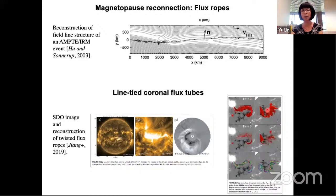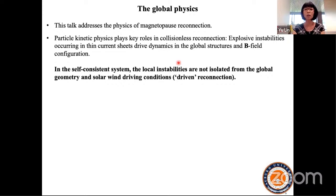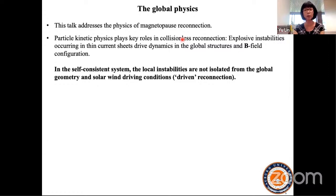My talk focuses on the physics of the Earth's magnetosphere. Reconnection happens in the collisionless fashion — the mean free path between charged particles is so long there are no collisions between them. So dissipation of the magnetic field is not through collision but through anomalous resistivity, which is the interaction between particles and the electromagnetic field.